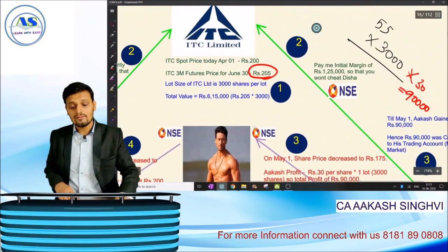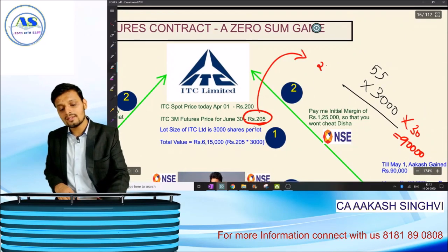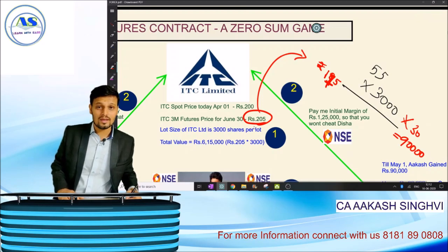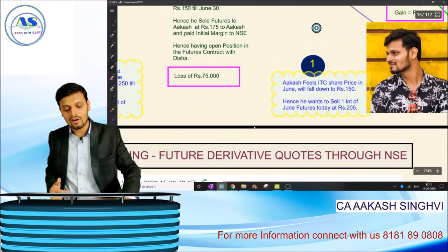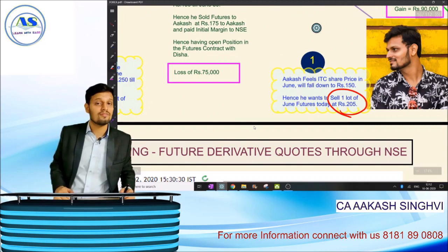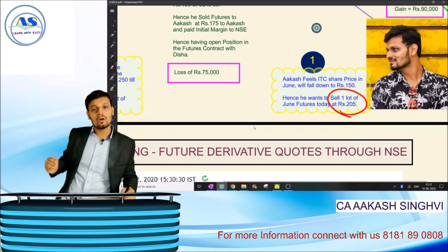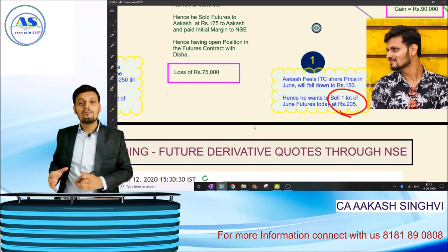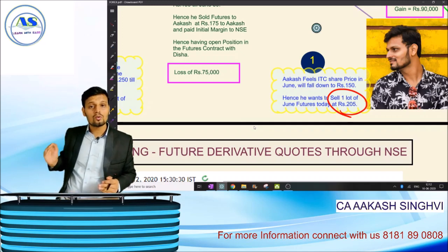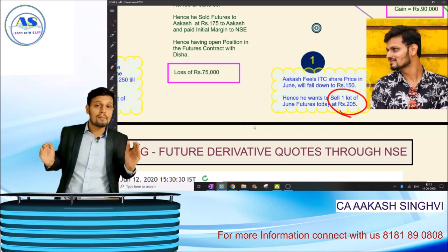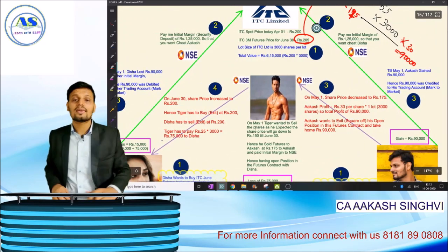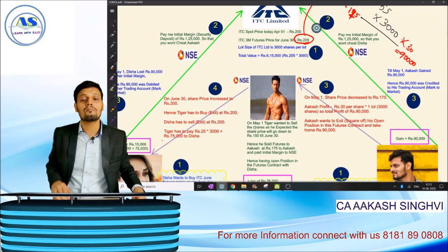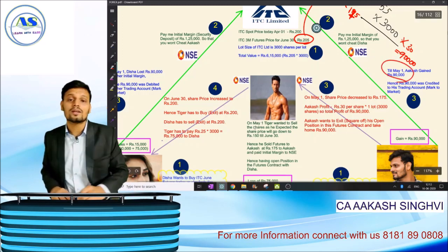Disha will lose money if the share price goes down, because she bought at 205 rupees. If the share price of ITC drops from 205 to 175 rupees, Disha will lose 90,000 rupees. Akash has sold futures at 205; if the futures price comes down to 175, he will buy at 175 to exit the contract — selling at 205 and buying at 175 gives a profit of 30 rupees per share, into 3000 shares equals 90,000 rupees credited to Akash.